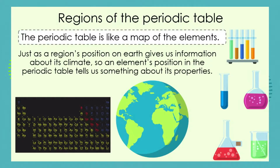Let's recap a little bit about what we learned in our last lesson. We said that the periodic table is like a map of the different elements, so just as a region's position on Earth gives us information about its climate, an element's position in the periodic table is going to tell us something about its properties.